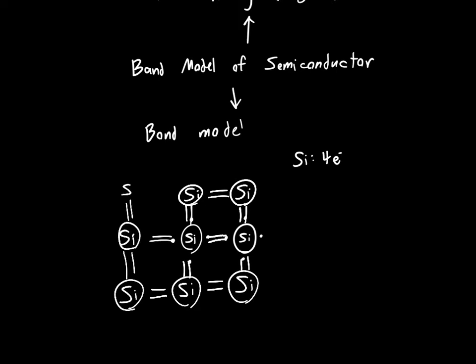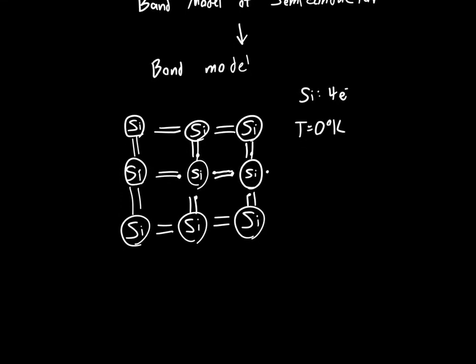So we've got all of our silicon atoms. Now at T equals zero degrees Kelvin, this picture is accurate. So every silicon atom is bonded to every other silicon atom that's adjacent to it. But as we start to increase the temperature, these silicon atoms start to vibrate.